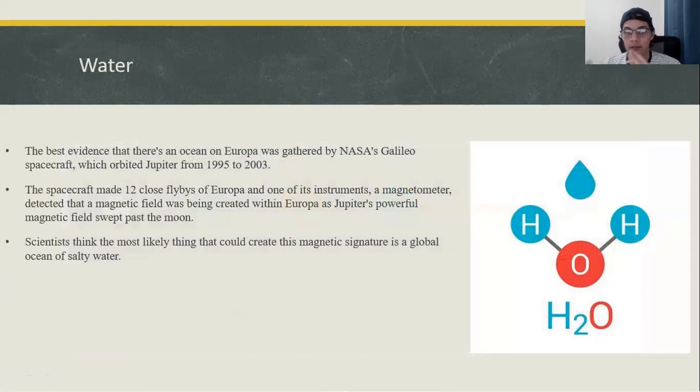Water is at the top of the list of ingredients for life because it transports nutrients for organisms to eat, transports chemicals within living cells, and allows those cells to get rid of waste. Scientists also think there's a rocky sea floor at the bottom of the ocean, and if that's true, the interaction between the ocean and the rocks could possibly supply chemical nutrients for living organisms.